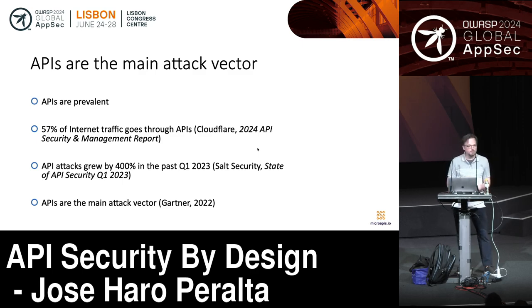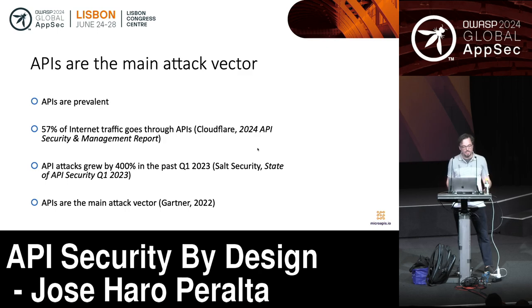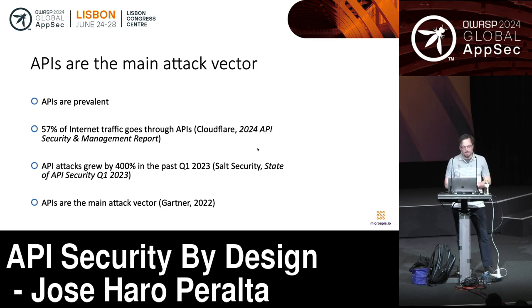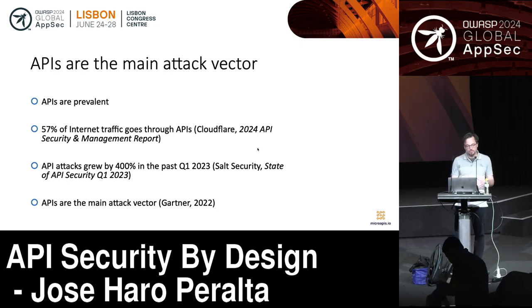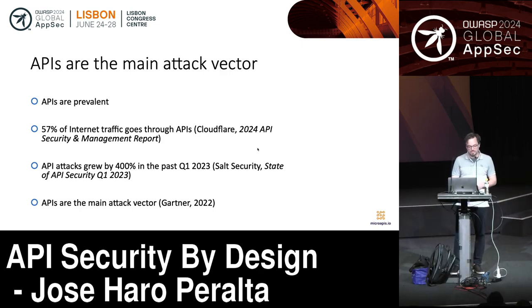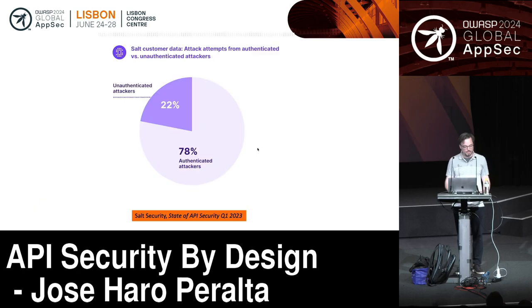API security is important because APIs are now the main vector of attack on our systems. Most internet traffic goes through APIs — depending on where you look, it's anywhere between 60% to above 90% of all internet traffic. This matters because APIs carry business functionality and data, and if we are not good at protecting this functionality, people have unfettered access to major holes in our systems.